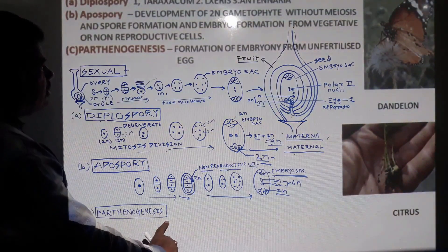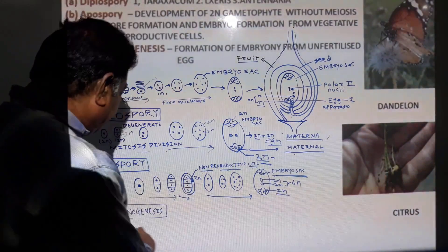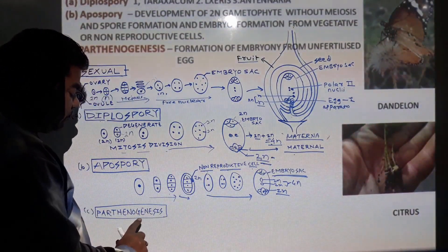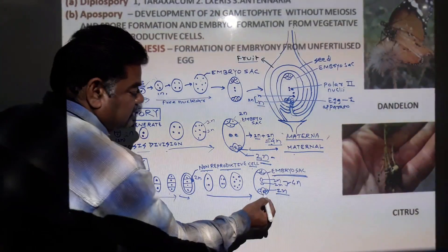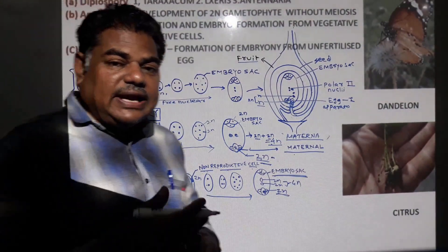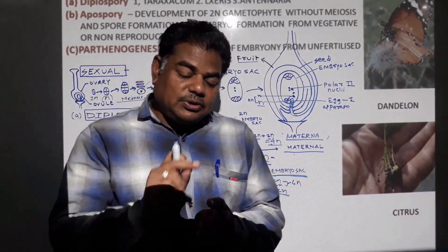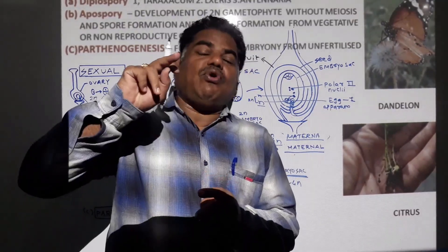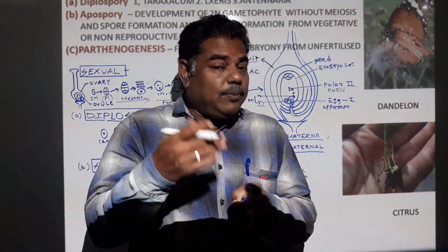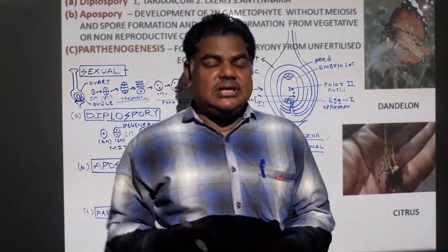The third type is Parthenogenesis — without the act of fertilization, embryo formation takes place from the egg. We call it Parthenogenesis. The embryo may be haploid in some cases and diploid in some cases in Apomyxis.